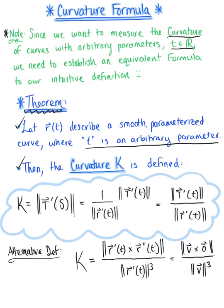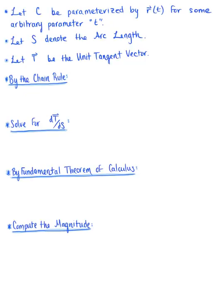These are the two definitions we use for parametric representations of curves with arbitrary parameters. Now let's go ahead and prove this — we need to derive where this formula comes from. Here is the proof for our computation definition of curvature for curves parametrized by a vector valued function with an arbitrary parameter. We begin by letting C be parametrized by a vector valued function r of t for some arbitrary parameter t.